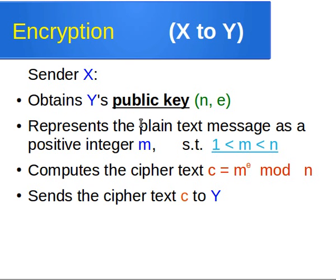Let's assume X has a plain text message. We represent that plain text message as a positive integer M such that M is larger than 1 and less than N. Always remember the integer we use to represent our original data needs to satisfy 1 < M < N. If, for example, you take text and use ASCII codes placed next to each other and the resulting value is larger than N, then you can split M into smaller values. You need to find a way of breaking M down so that M is always larger than 1 and less than N.